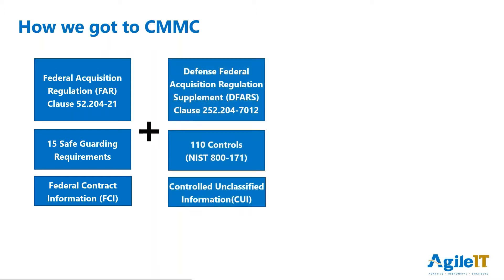Every cabinet-level agency and department buys things differently, and they can create their own supplements to the federal acquisition regulations. For the DOD, this is DFARS — the Defense Federal Acquisition Regulations Supplement — which came about in 2010. It's important to know that DFARS adds on to the FAR and does not replace it. On December 21st, 2017, DFARS Clause 252.204-7012 — which I'll just call DFARS-7012 moving on — came into effect.